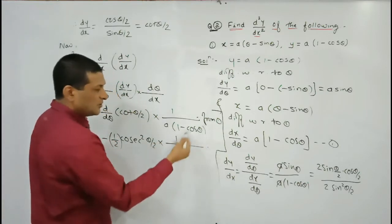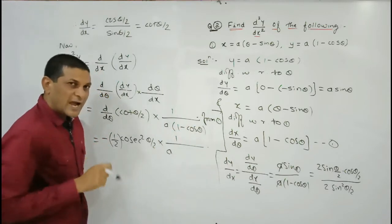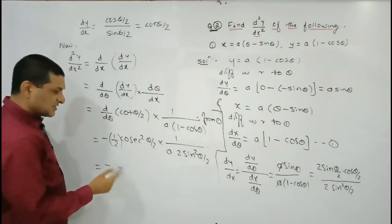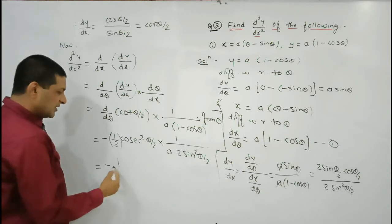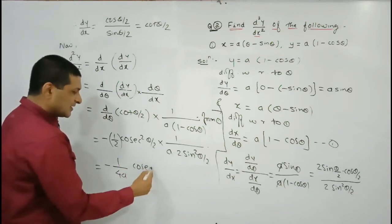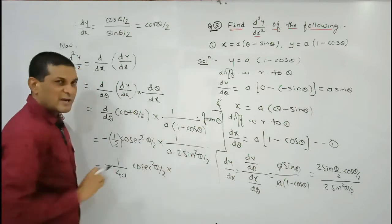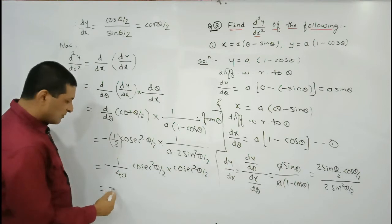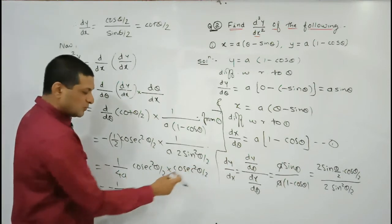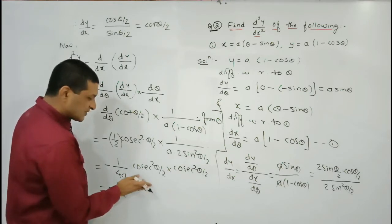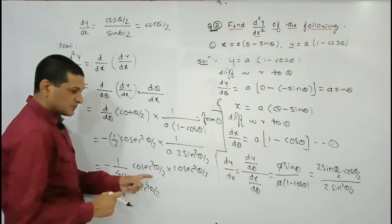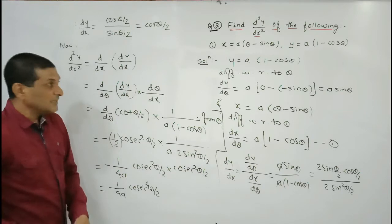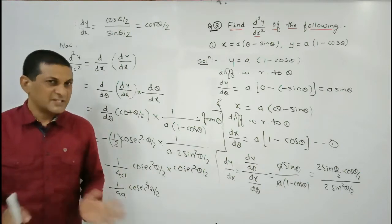Substituting and simplifying: multiply by 1/[a(1-cosθ)] where 1 - cosθ = 2sin²(θ/2) by the half-angle formula. This gives: -cosec²(θ/2) · (1/2) · 1/[a · 2sin²(θ/2)]. The denominator becomes 4a·sin²(θ/2). Shifting sin²(θ/2) to the numerator gives cosec²(θ/2), and combining cosec²(θ/2) · cosec²(θ/2) = cosec⁴(θ/2). Therefore d²y/dx² = -1/(4a) · cosec⁴(θ/2).